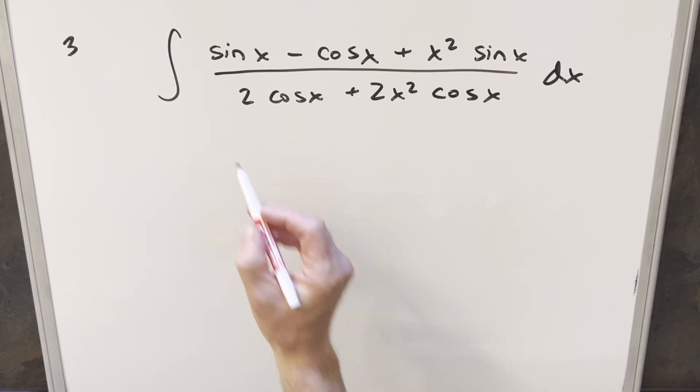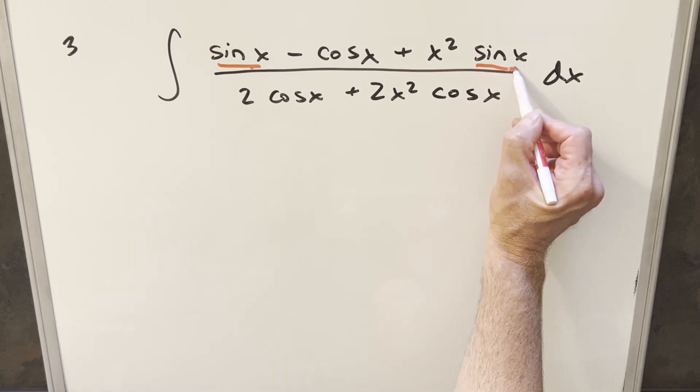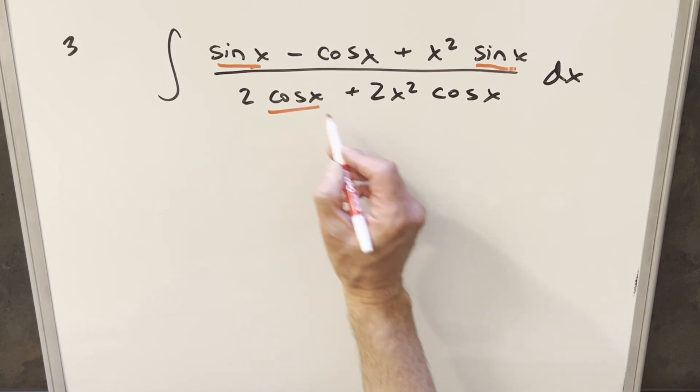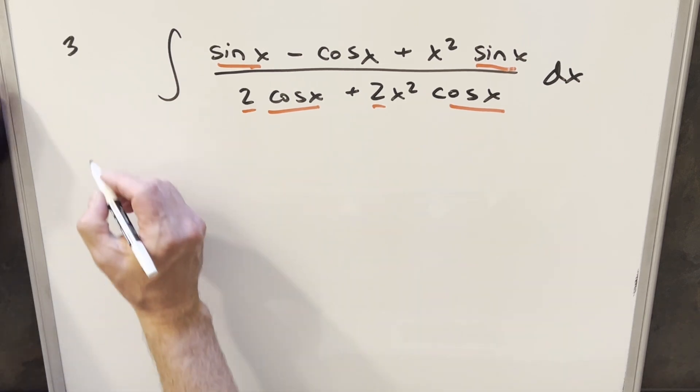Okay, what I notice here is in the numerator, we've got sine in common here. There's a lot of patterns here, like we've got the x squared here and here. We've got cosine here and here. We also have a 2 in common. It's making me think we can just do some factoring and hopefully get some cancellation or simplification.